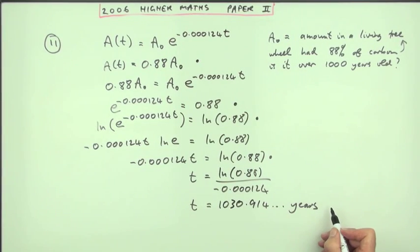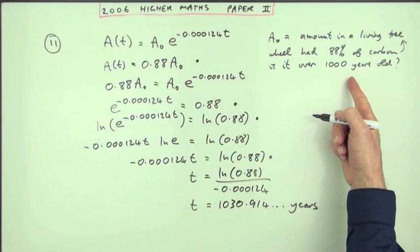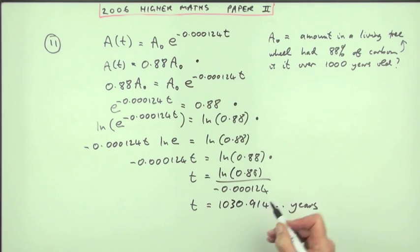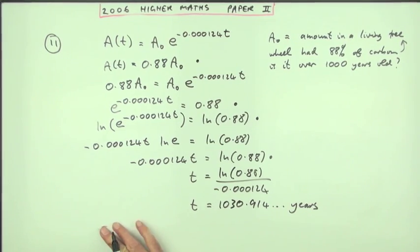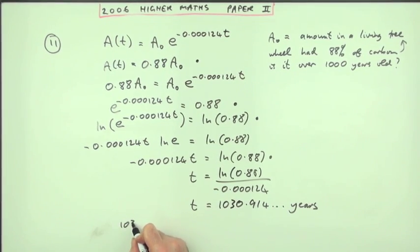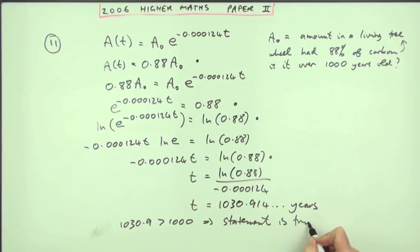Now that would be the fifth mark except you'll have to answer the question which was: is it over a thousand years old? Well yes, that's more than that. 1030.9 is greater than a thousand which means the statement is true. Now you get the final mark.